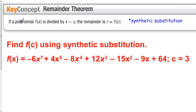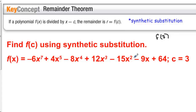Remainder theorem: if a polynomial f of x is divided by x minus c, the remainder r is equal to f of c. In other words, if we want to find f of 3 for this polynomial — plugging 3 into all these x's — that's the exact same as the remainder when we do synthetic division.